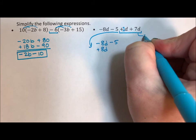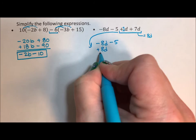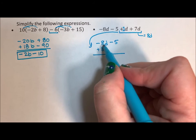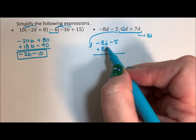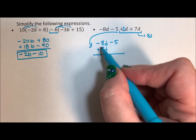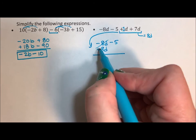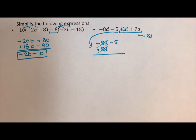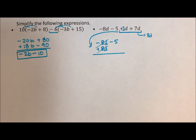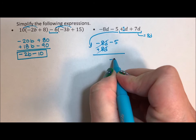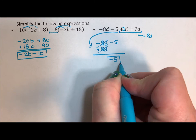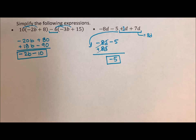Because remember, this is equal to 8d. Well, negative 8d plus 8d is 0, so those go away. That means there are no d's left. We are just left with negative 5. All the d's go away.